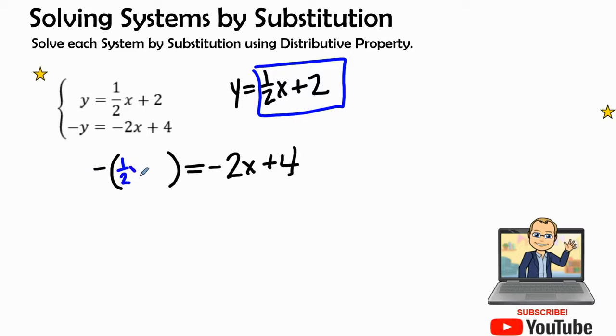Let's go ahead and plug in 1 half x plus 2. Let's distribute. When we distribute this is usually an imaginary one, so it's a negative 1 times 1 half x gives me a negative 1 half x. Negative 1 times a positive 2 gives me a negative 2, equals a negative 2x plus 4.